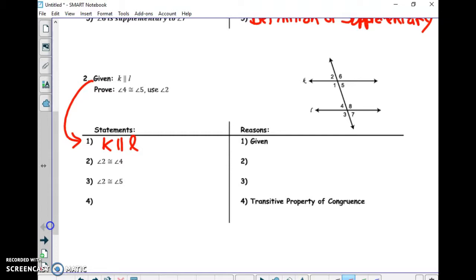Let's notice what I'm trying to prove here. I'm trying to prove four is congruent to five using angle two. We should know they're already congruent because they're alternate interior angles. But I want you to use angle two to prove that. Notice step two and three are both using angle two. How do I know angle two is congruent to angle four? Here's two and here's four. What kind of angles are those? Corresponding angles.